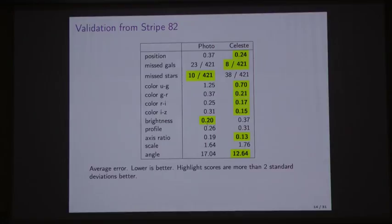There are also four parameters for galaxies at the bottom, and we're better on two of the four, and on the other two it's a statistical tie. But the improvements in position and color were the main improvements we have.